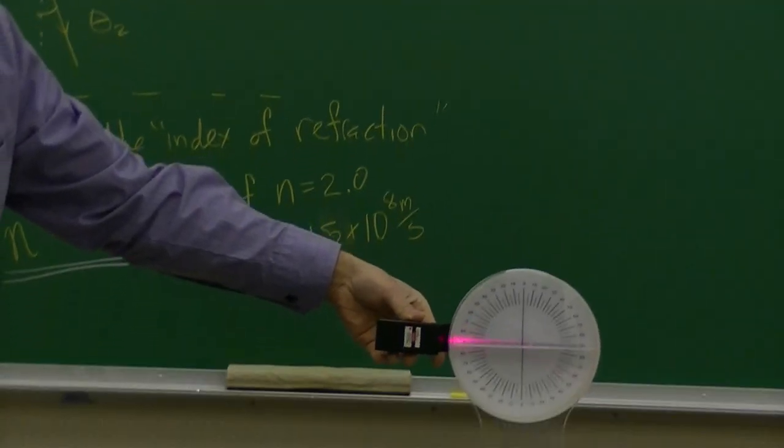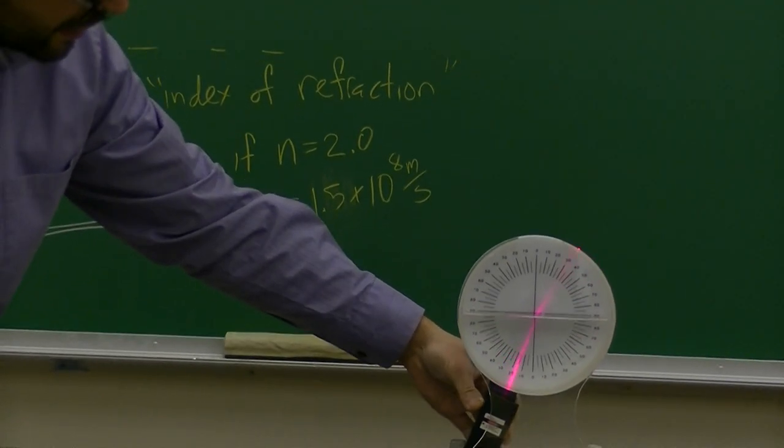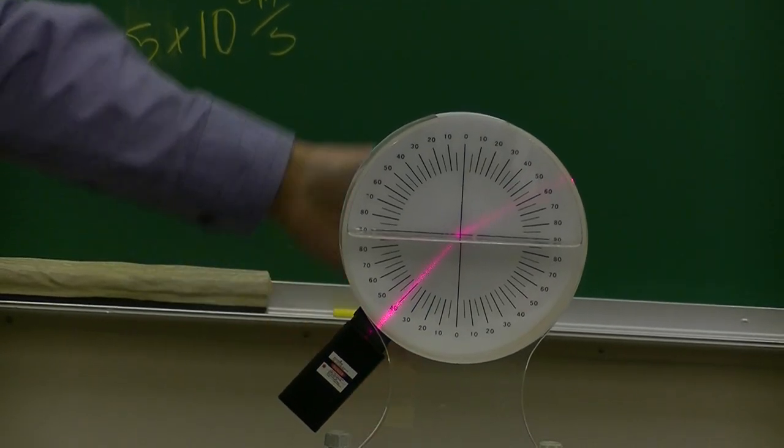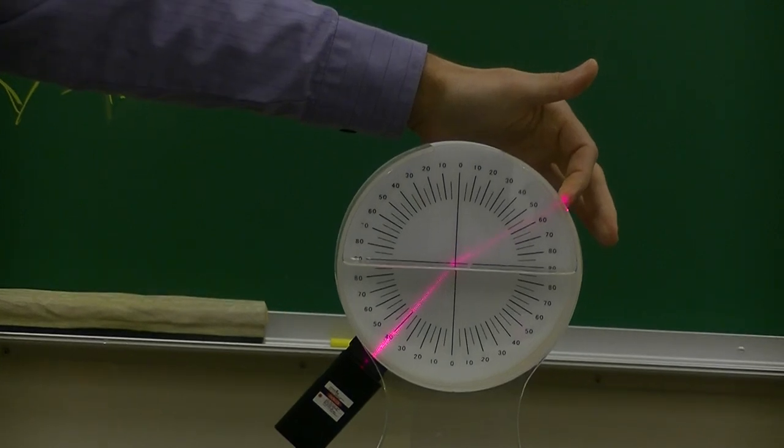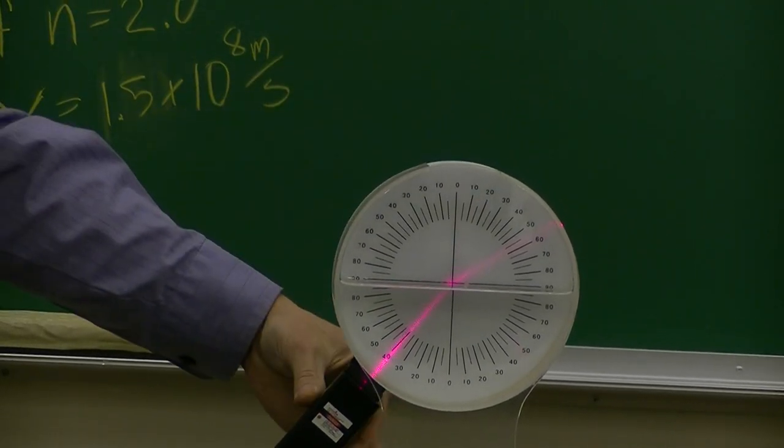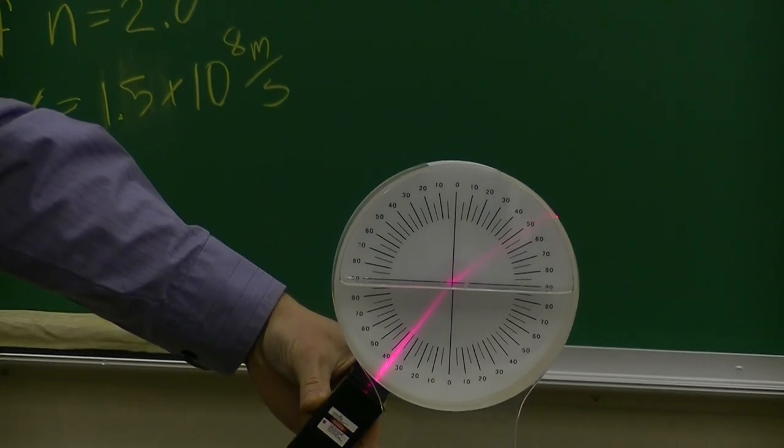And then I'll move this down to demonstrate something else. So if I make this 42 degrees leaving water, I see it's about 60 degrees in air. So light bends the same way, air to water, water to air. But then something interesting happens if I do this.